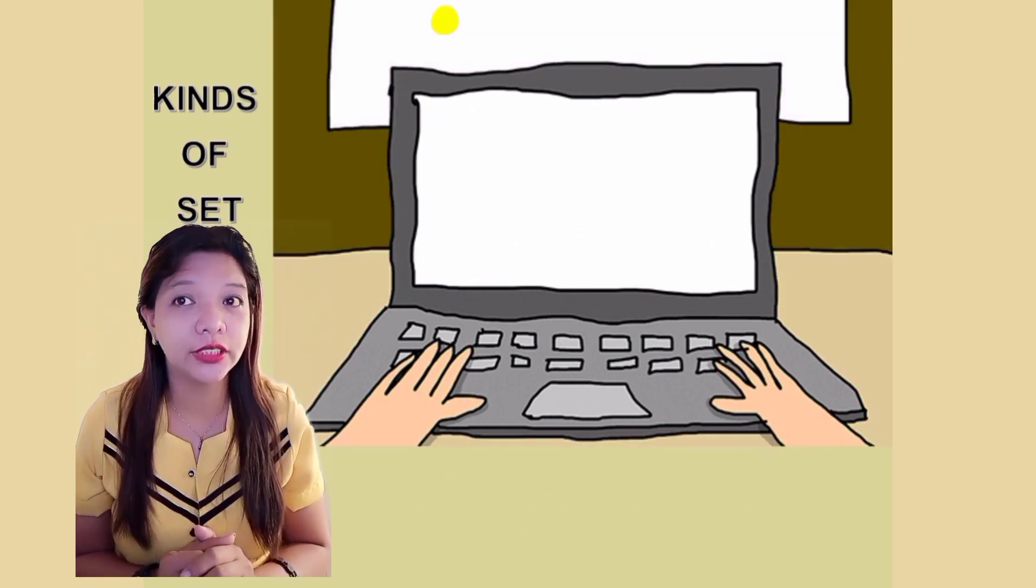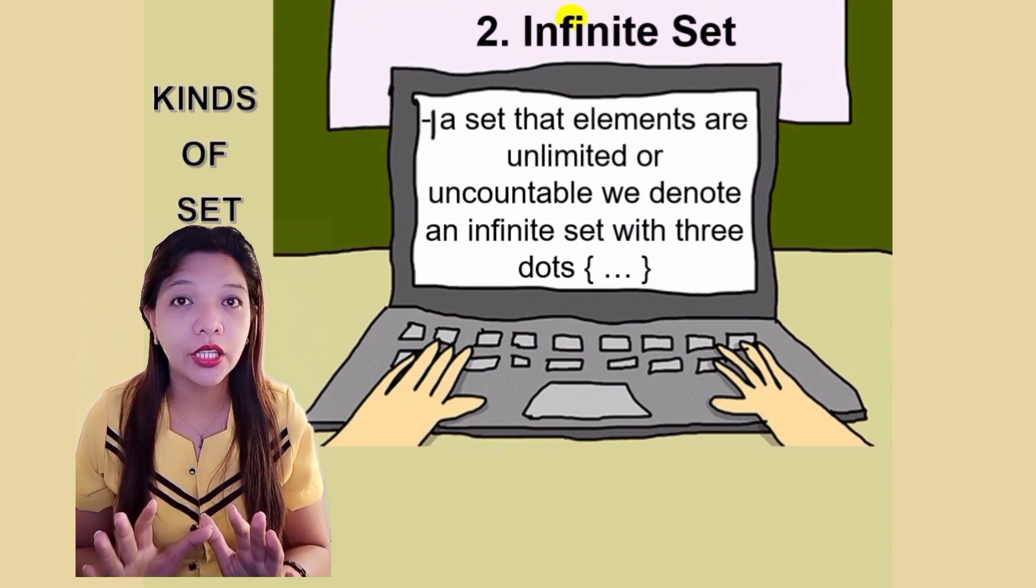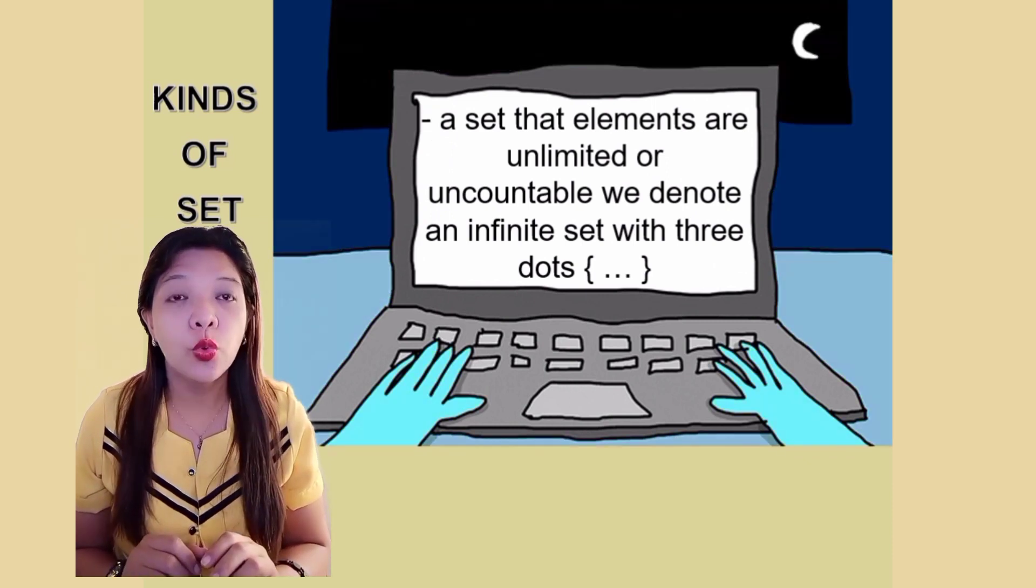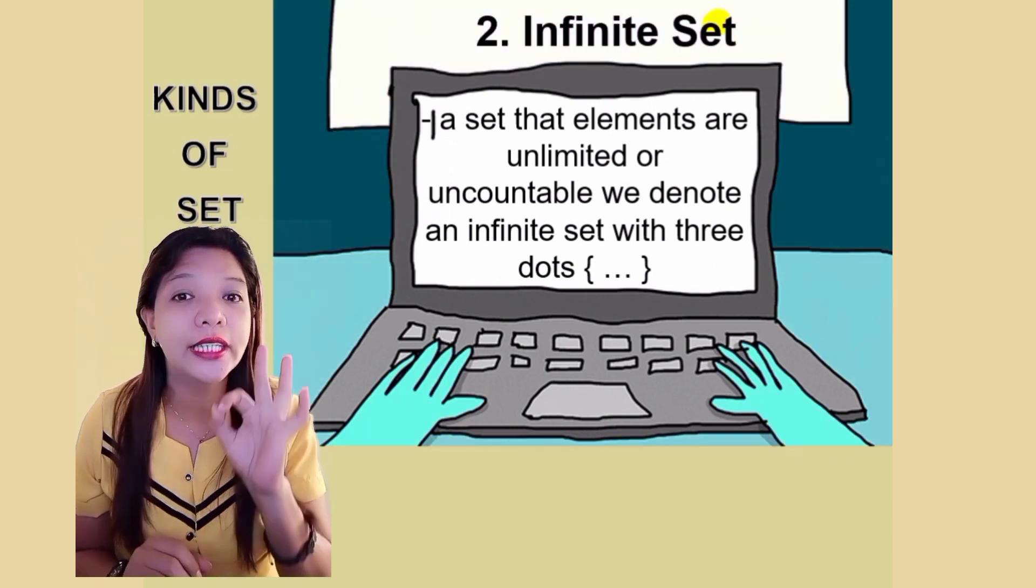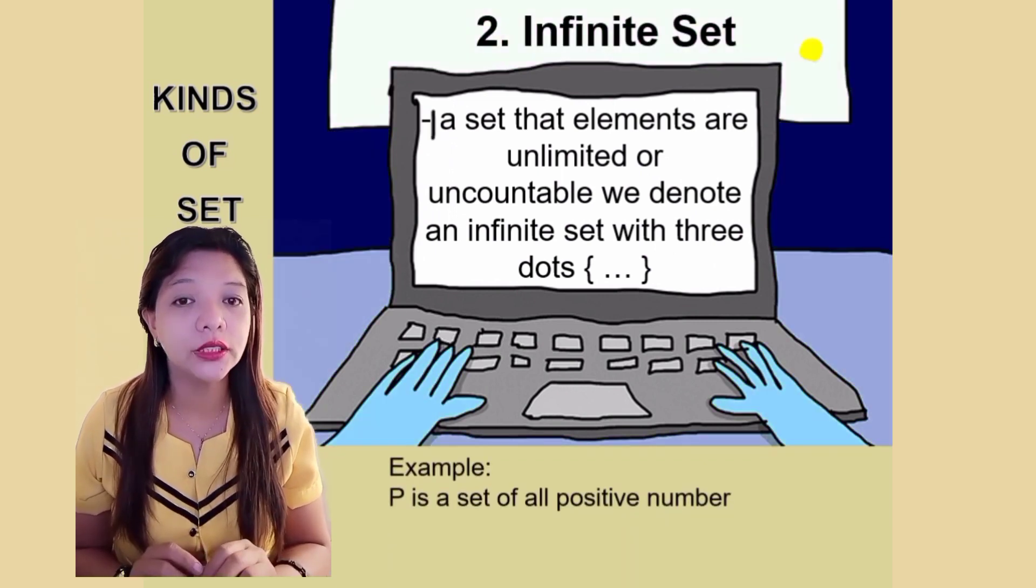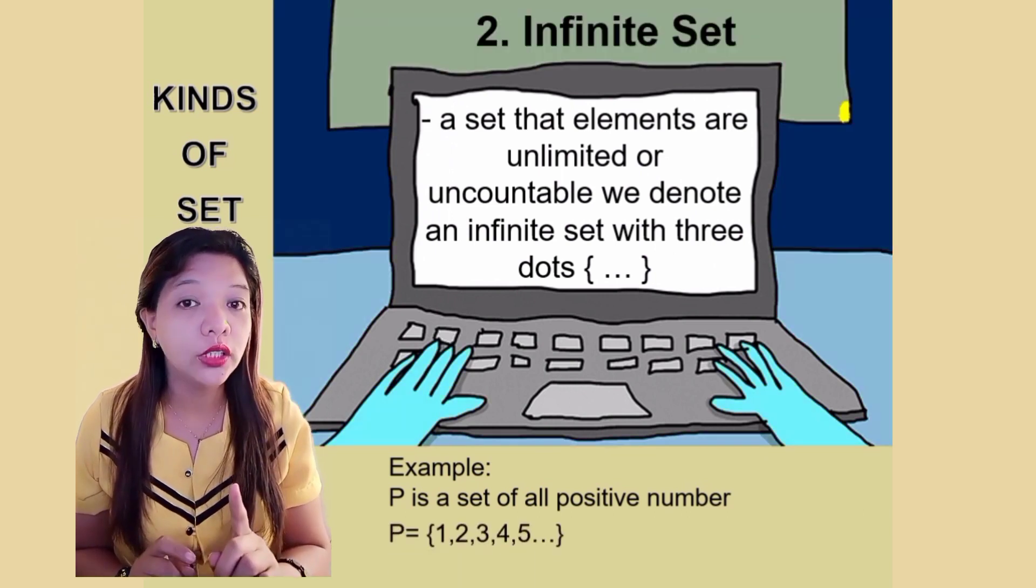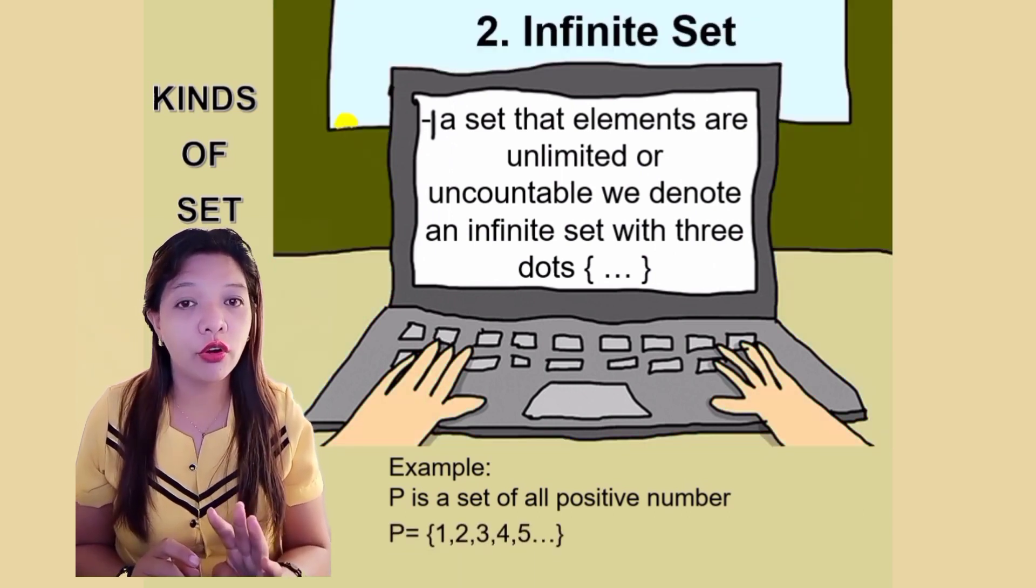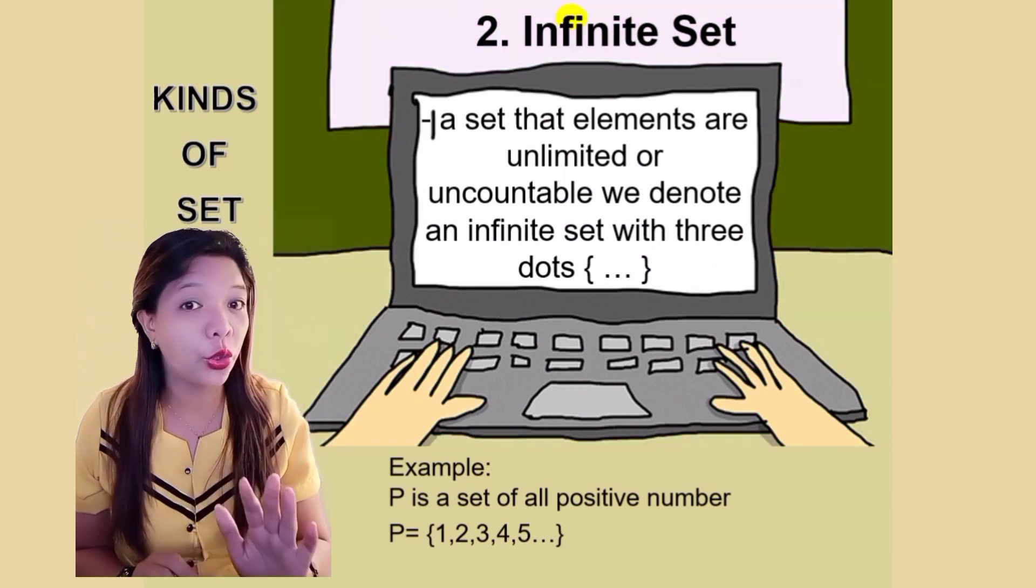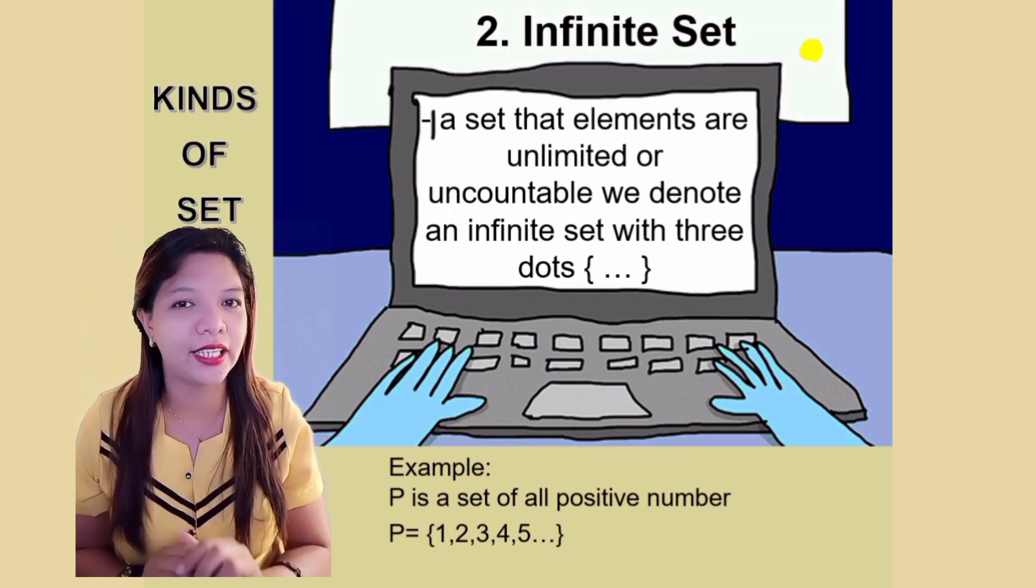Our second kind of set is infinite set, a set that elements are unlimited or uncountable. We denote an infinite set with 3 dots. For example, P is a set of all positive numbers. P is equals to open brace 1, 2, 3, 4, 5, 3 dots, meaning and so on. There are unlimited numbers of elements inside it.